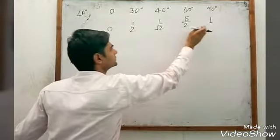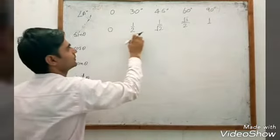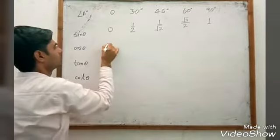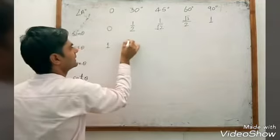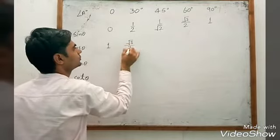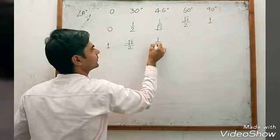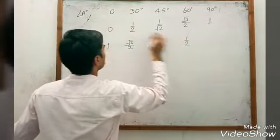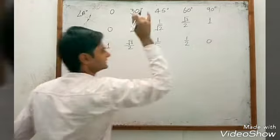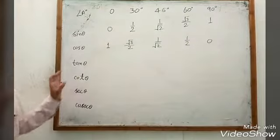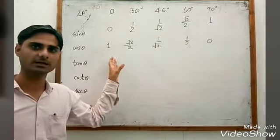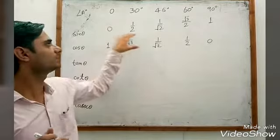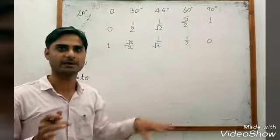For cos θ, take the opposite order of the sin θ values. So cos θ values are: 1, √3/2, 1/√2, 1/2, 0. This is a very easy way to make this table — no need to memorize, you can make it anytime anywhere.